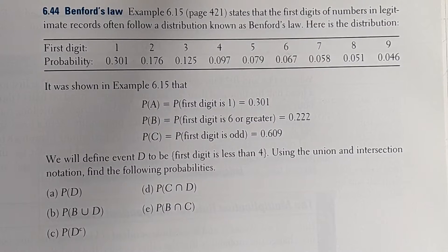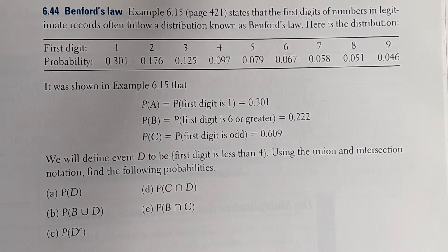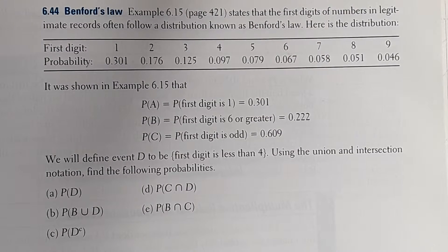Now we're looking at page 425, problem 6.44, Benford's Law. We're not really going to study Benford's Law. All we care about is the probability of these events. We have four events: Event A is the first digit is 1, Event B is the first digit is 6 or greater, Event C is the first digit is odd, and Event D is the first digit is less than 4. Using union and intersection notation, find the following probabilities.